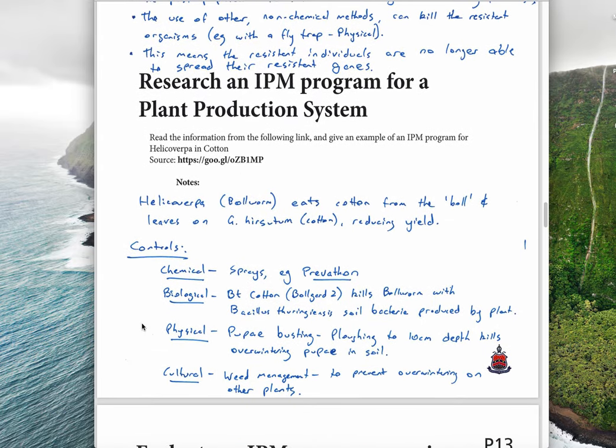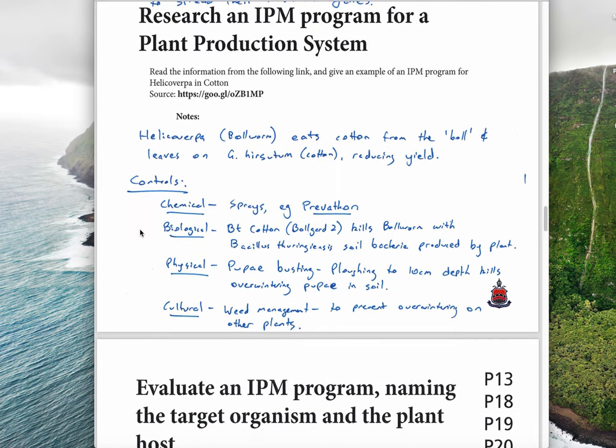The next question, research an IPM program for plant production system. Read the information below. Helicoverpa or bollworm eats cotton from the boll and leaves, and it also eats the leaves on cotton or Gossypium hirsutum, which obviously reduces yield. So how do we control that using an IPM strategy?